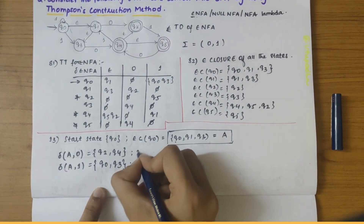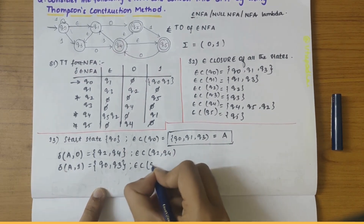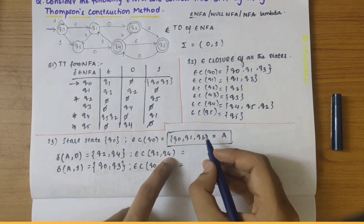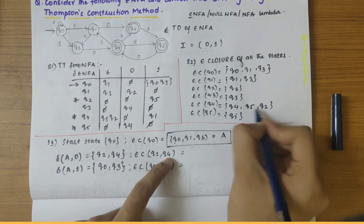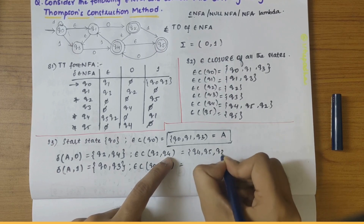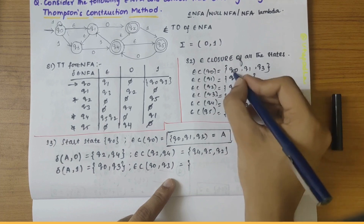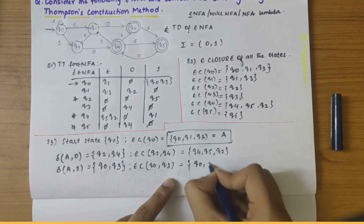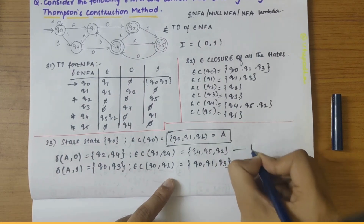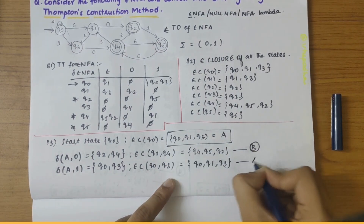Now find epsilon closure of {Q2, Q4} and epsilon closure of {Q0, Q3}. Epsilon closure of {Q2, Q4}: Q2 is Q2, Q4 gives Q4, Q5, Q2 — so it will be {Q4, Q5, Q2}. Epsilon closure of {Q0, Q3}: Q0 gives Q0, Q1, Q3 and Q3 gives nothing — so it will be {Q0, Q1, Q3}, which is similar to constant A. So we take {Q4, Q5, Q2} as constant B, and {Q0, Q1, Q3} is A.